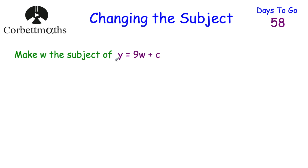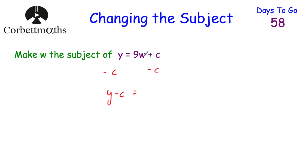Our next question says: make W the subject of Y equals 9W plus C. We want to get W on its own. On the right hand side we've got 9W plus C — we don't want this plus C and we don't want the multiplied by 9. So let's get rid of the plus C first by taking away C from both sides. On the left hand side, Y take away C gives Y subtract C. On the right hand side, we had 9W plus C; we took away C, so we're just left with 9W.